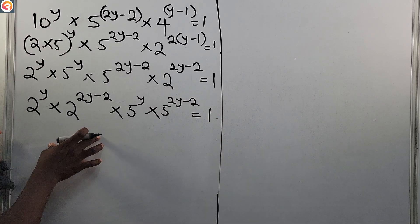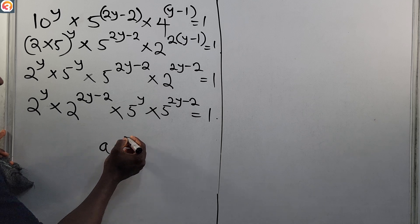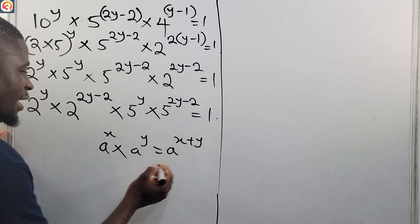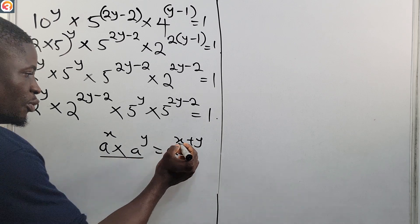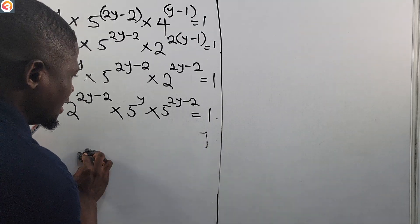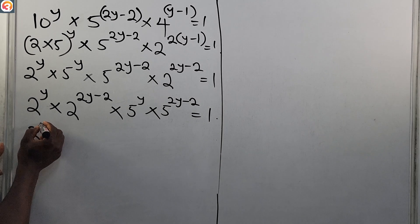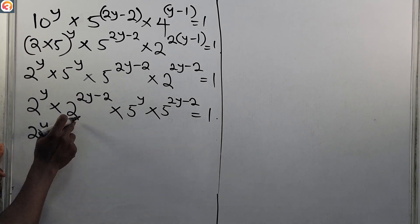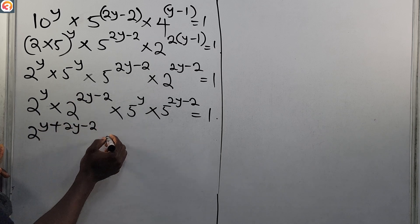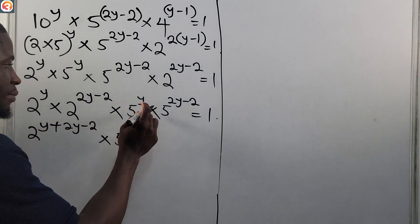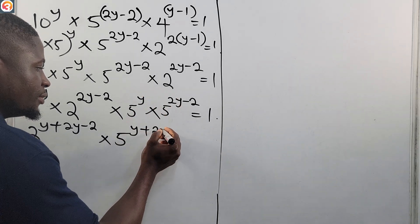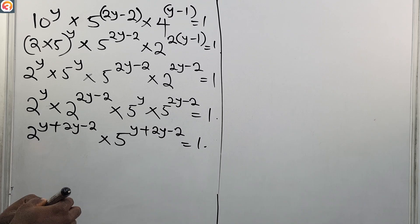From the law of indices: a raised to power x times a raised to power y equals a raised to power (x plus y), when the bases are the same we add the powers. Applying this here: 2 raised to power (y plus 2y minus 2), times 5 raised to power (y plus 2y minus 2), equals 1.